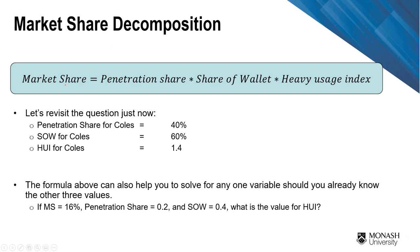The market share decomposition is technically composed of three components: penetration share, which measures how much of the customers are actually willing to purchase; share of wallet (SOW), which measures how loyal they are — how much they actually purchase from Coke versus other products; and the heavy usage index (HUI), which measures how frequently or intensely they use it. Together, these give you the market share.